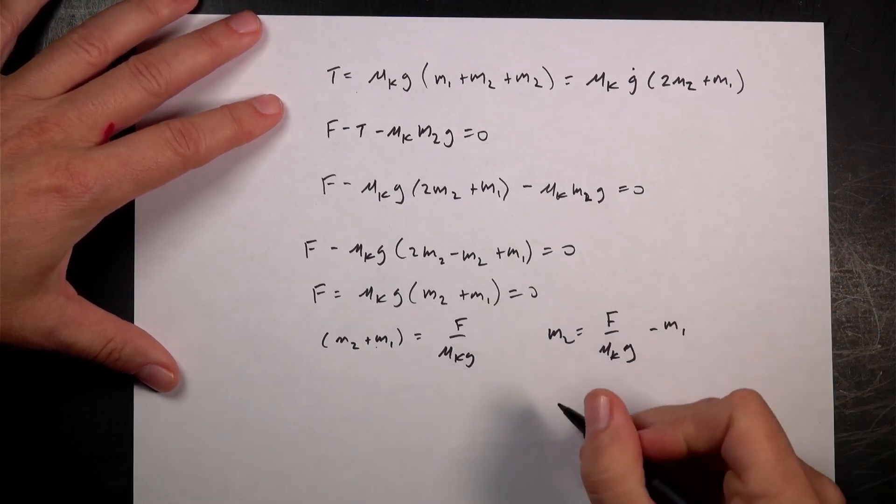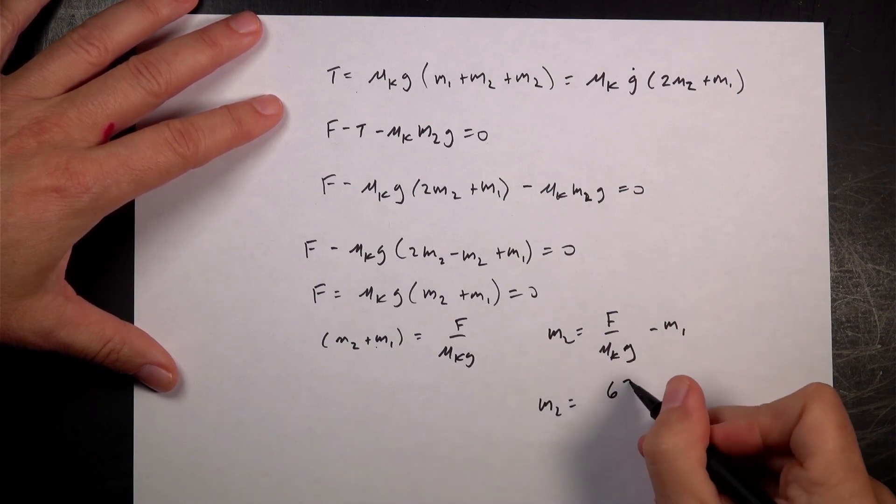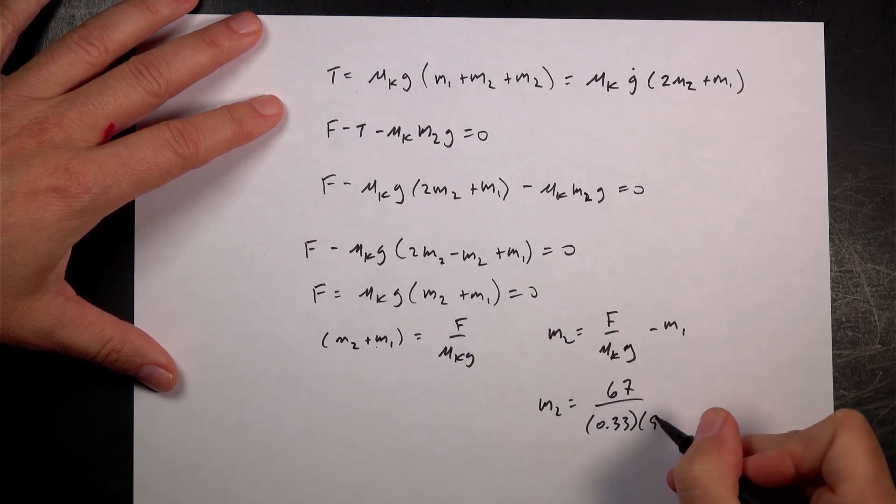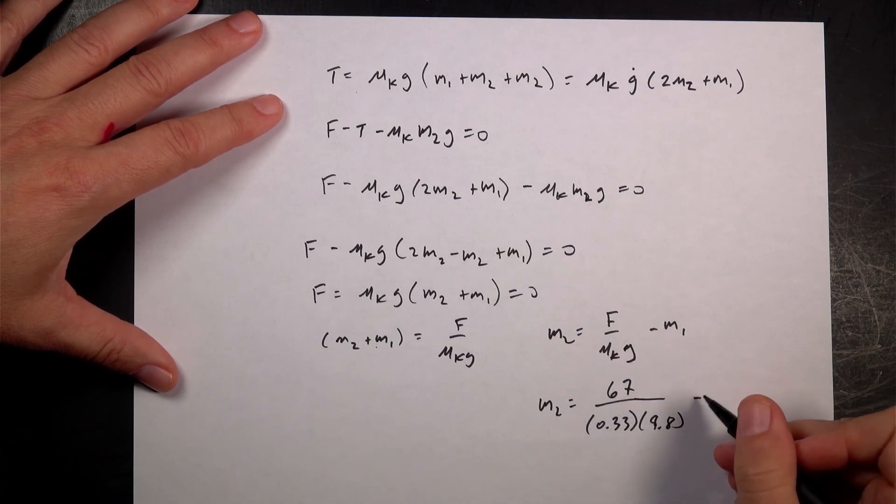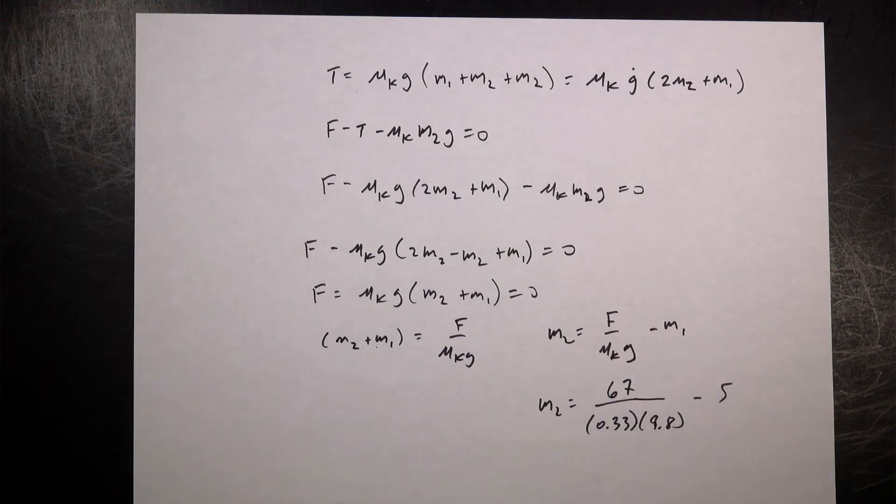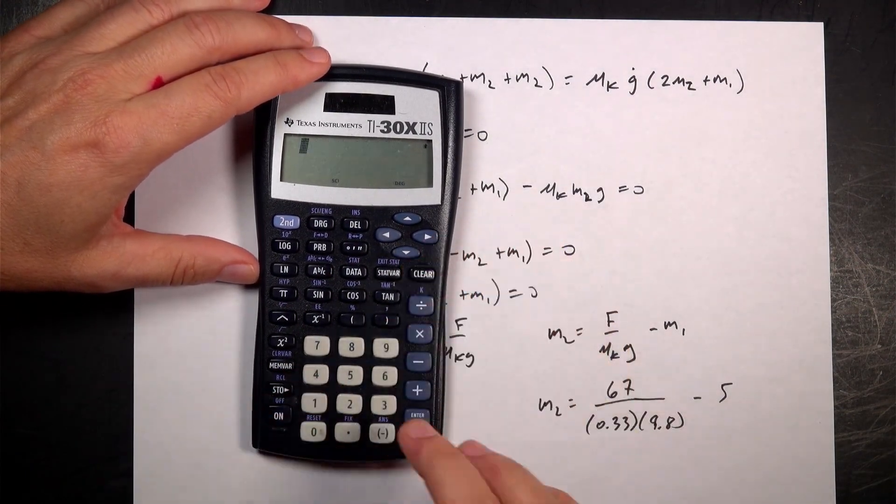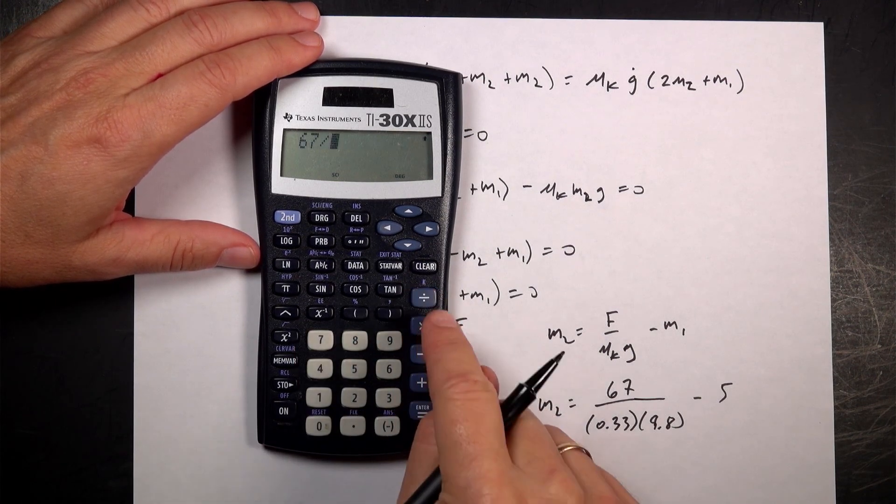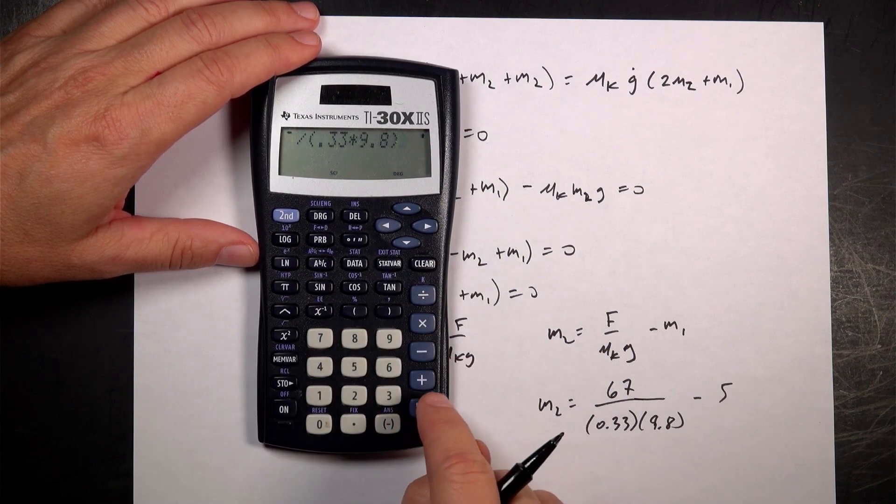Now I can put all my numbers in because I know these values. So M2, F is 67 over (0.33 times 9.8) minus M1, which is 5. It's kind of a weird problem. I mean, I don't really like it to tell you the truth.